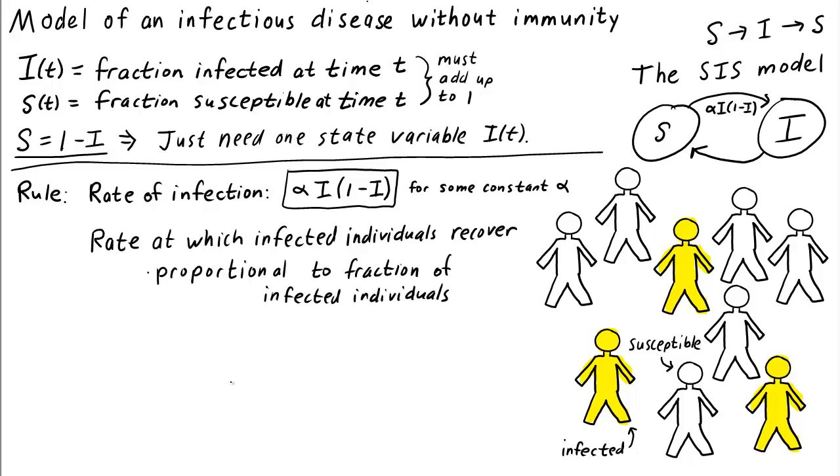Therefore, it's reasonable to model the recovery rate as being proportional to the fraction of infected individuals. So we'll let the rate of recovery be equal to mu times i for some proportionality constant mu. So let's label the arrow going from i to s by the rate mu times i.